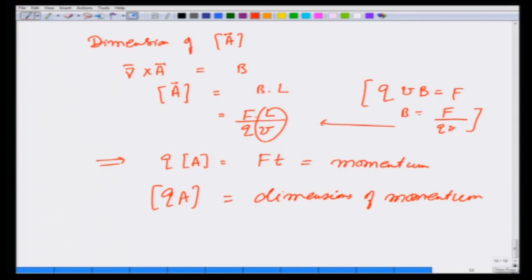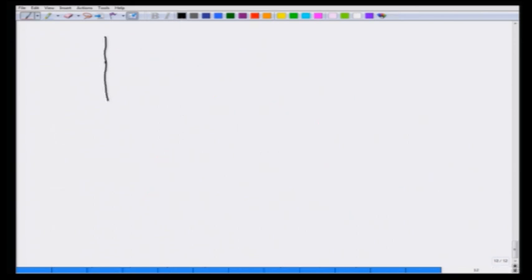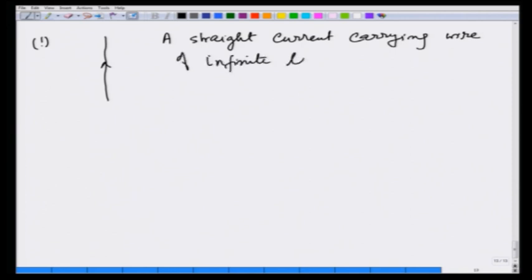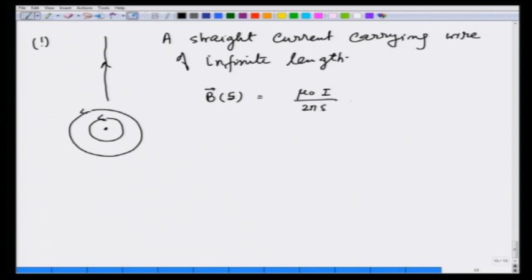Let us now take examples and solve some certain problems where we calculate the magnetic vector potential. Example one: I will take a straight current carrying wire of infinite length. In this case we just saw in the previous lecture that we have calculated earlier also that B field looks like going around in circles like this, and therefore I can write B at a distance s is equal to mu naught i over 2 pi s in the direction phi.